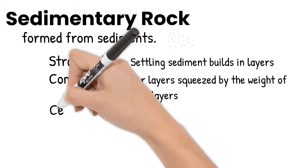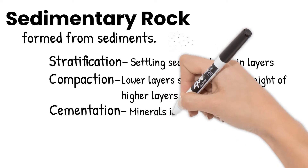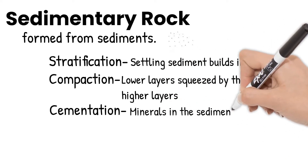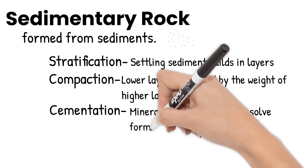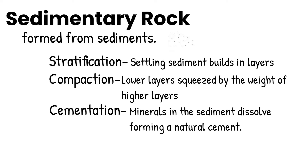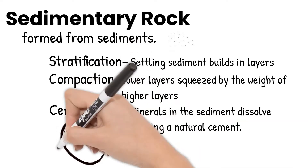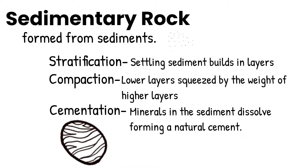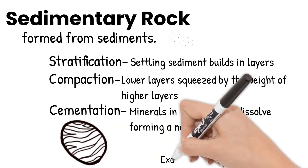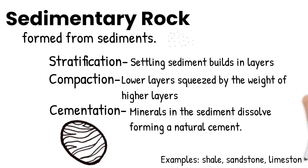Sometimes cementation happens, which is when some minerals in the sediments dissolve in the water and create a natural cement. From this stratification, compaction, and cementation, sedimentary rocks are formed. Some examples of sedimentary rocks include shale, sandstone, and limestone.